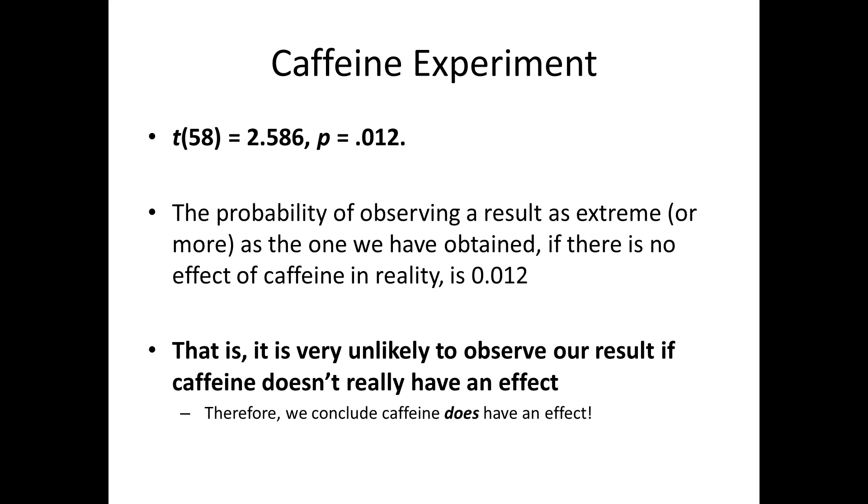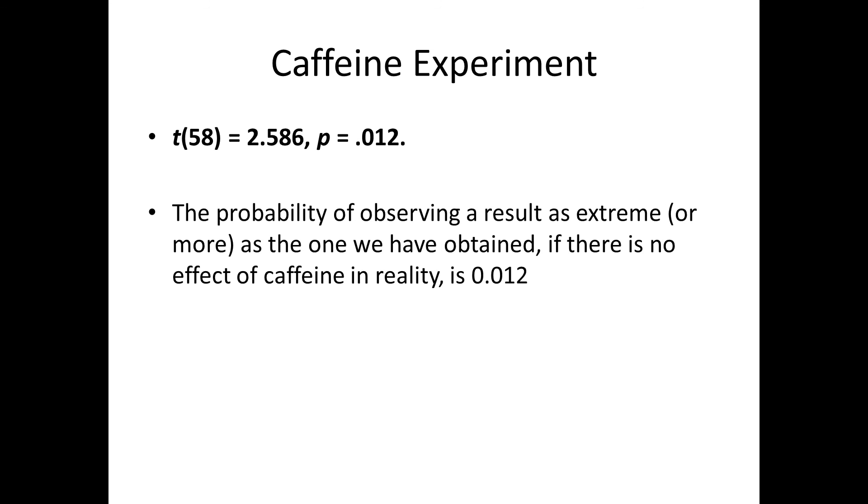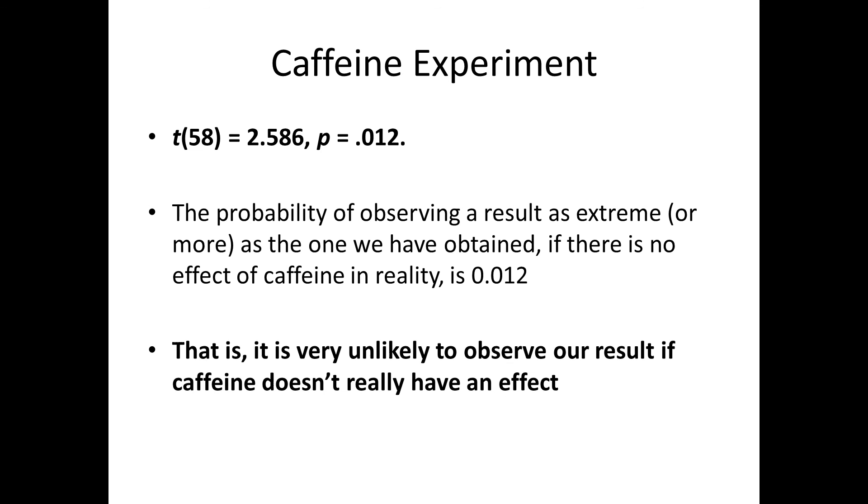So it's really important when you're trying to understand what the p-value is doing is to keep the true definition in mind. So the true definition of the p-value: the probability of observing results as extreme as the ones you've obtained if the null hypothesis is true. So if there's no effect in reality, in the case of our experiment the probability of observing the result we have if there is no effect of caffeine is 0.012. So if in reality caffeine does not affect attentional performance then the probability of observing the results that we just saw in our experiment is really low. There's a really low probability of observing the difference that we have if nothing at all is going on. This is why we want a low p-value because it means that the probability of observing the data that we have if there is no effect going on is really small. Therefore by reverse inference we can conclude caffeine does indeed have an effect.